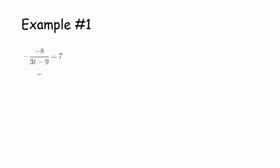So I'm just going to rewrite the equation as 8 over 3t minus 9 equals 7, and I'm giving myself some space here because the strategy for these is that we want to eliminate all of the denominators or have everything have a denominator of 1.